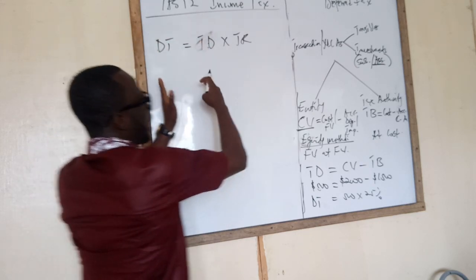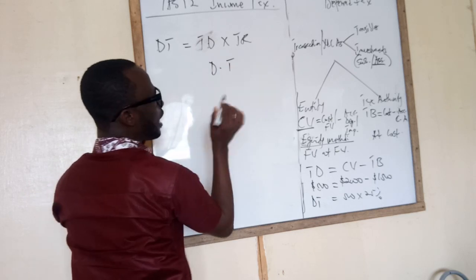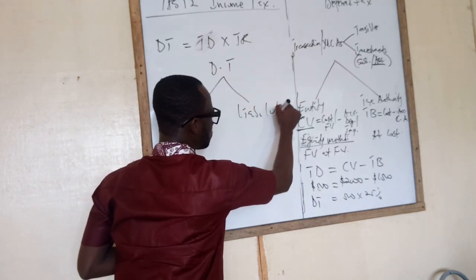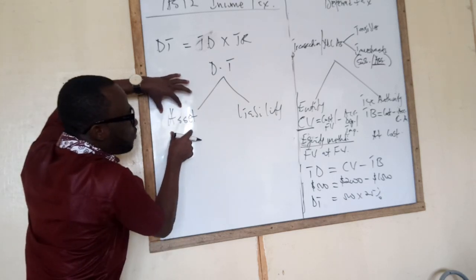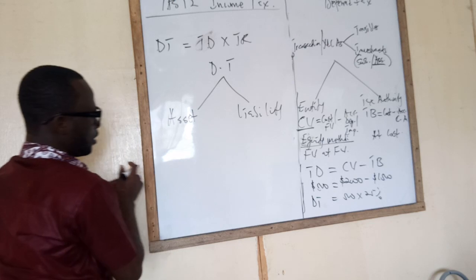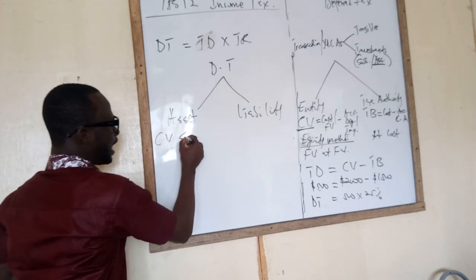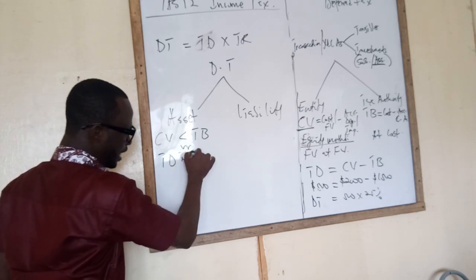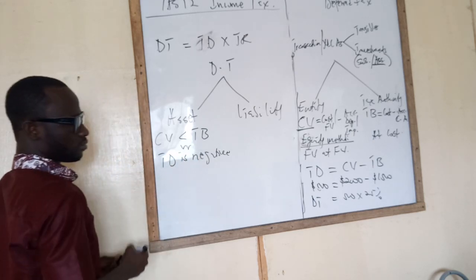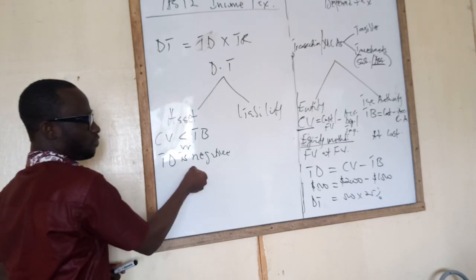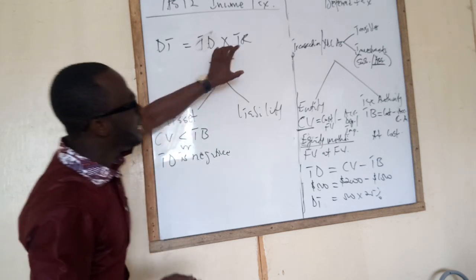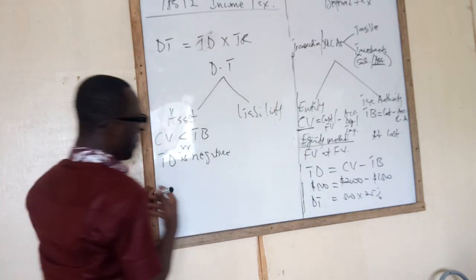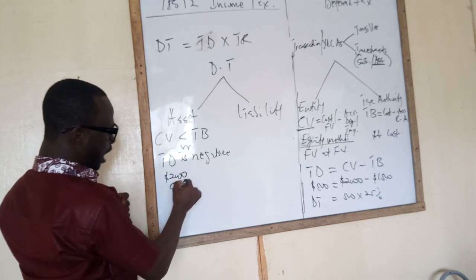The issue about deferred tax can be divided into two: we can have a deferred tax asset or a deferred tax liability. There is a deferred tax asset when the carrying value of the asset is less than the tax base of the asset, or when your temporary difference is negative. If your temporary difference is negative or your carrying value is less than the tax base, that leads to deferred tax assets. In my scenario here, you are carrying the asset at $2,000 as the carrying value, but then...